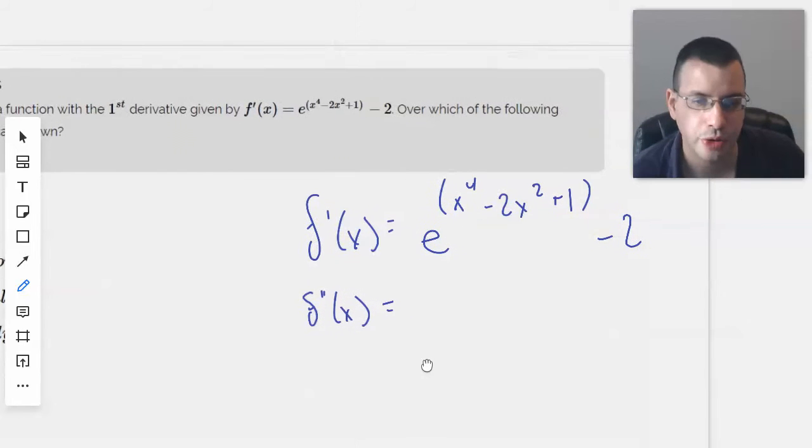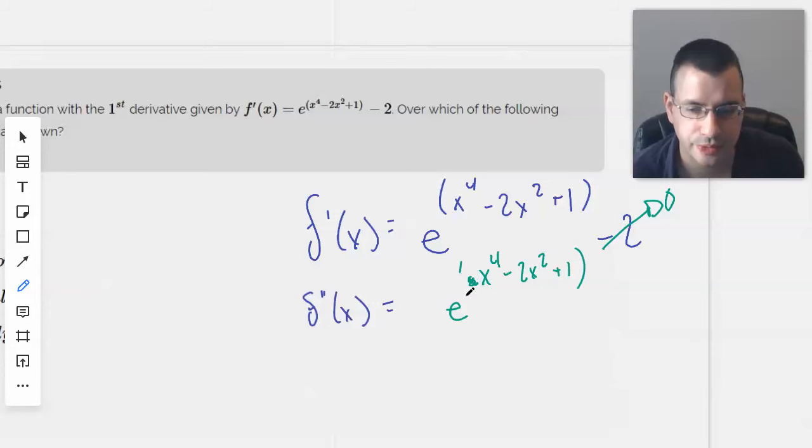The negative 2 just goes away. Then we have e^(x^4 - 2x^2 + 1) times the derivative of the interior, which would be 4x^3 - 4x.